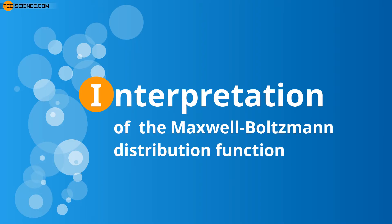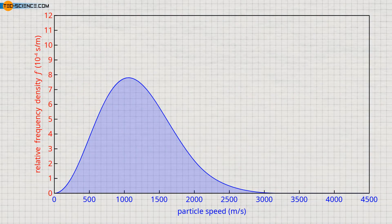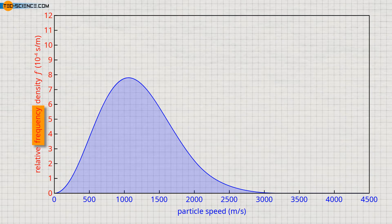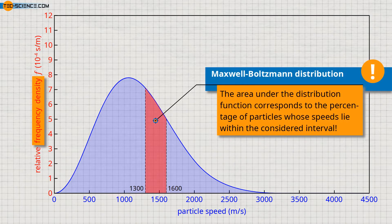Interpretation of the Maxwell-Boltzmann distribution function. The Maxwell-Boltzmann distribution describes the frequency with which certain molecular speeds occur in an ideal gas. In principle, however, it is not possible to assign a concrete number of molecules to a specific speed. One will never find a single molecule that has a certain speed exactly up to the last decimal place. One can only assign speed ranges to a concrete number of particles — that is, the number of particles whose speeds lie within a certain interval, for example between 1300 and 1600 meters per second. Therefore one chooses a graph in which the area under the curve between two speeds corresponds to the percentage of molecules whose speeds lie within the considered range.